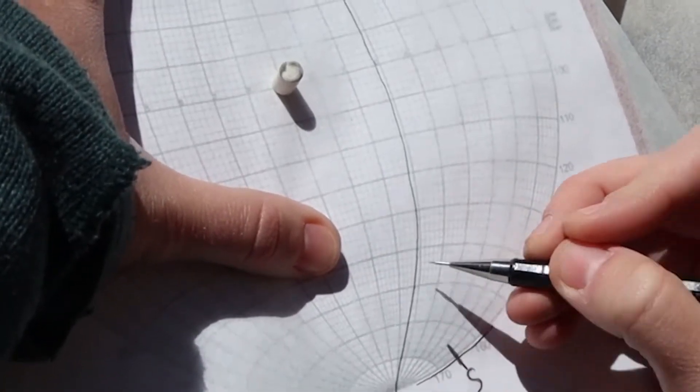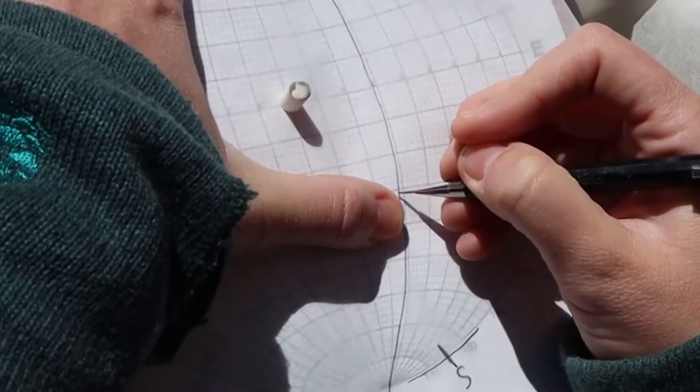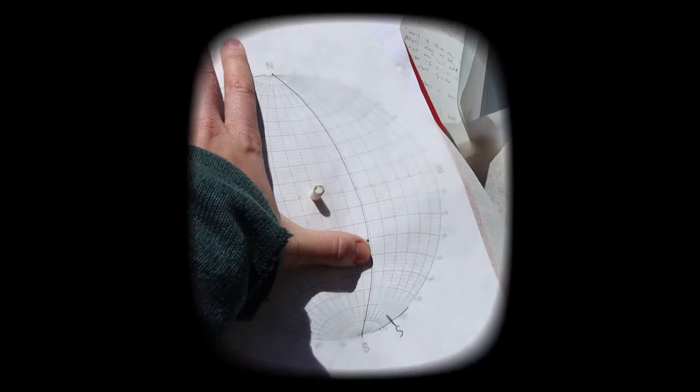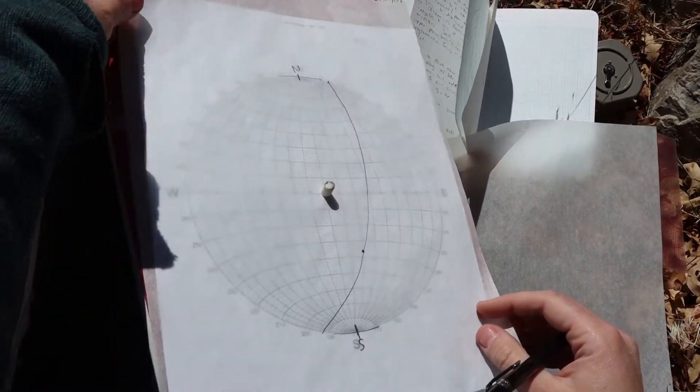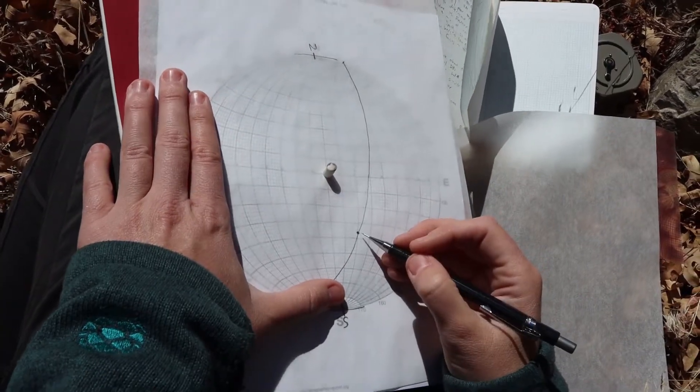This is 10, 20, 30, 40, 50, 59. And that is the line I've now plotted, so this is my trend and plunge.